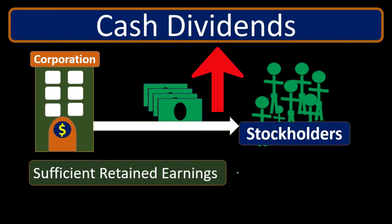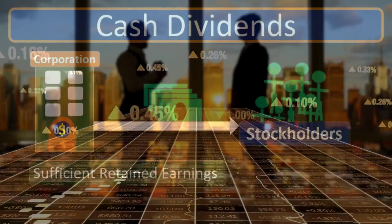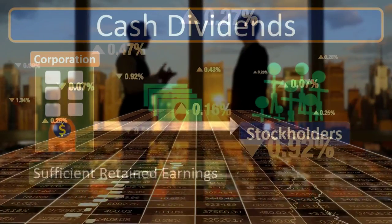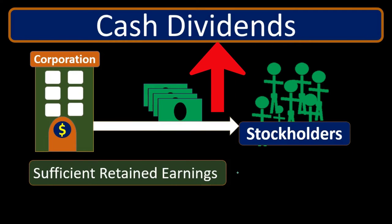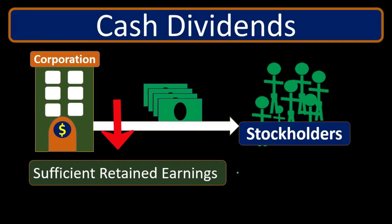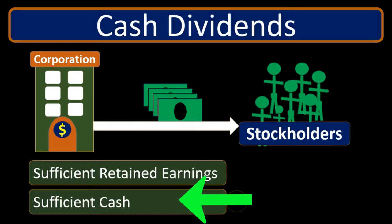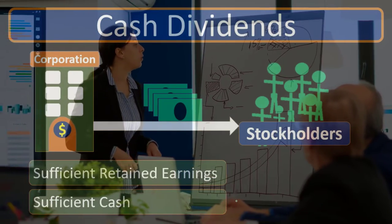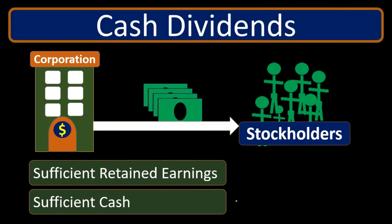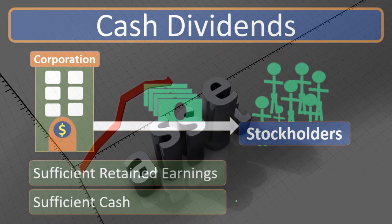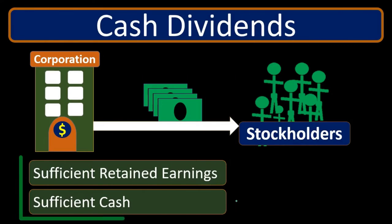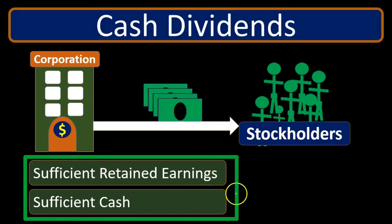When we give out dividends, we want to make sure we're giving them from the earnings of the corporation over and above the initial investment, because distributing the initial investment could have tax and other consequences. So one restriction is whether there are sufficient retained earnings. Another restriction is that we must have sufficient cash — just because we have retained earnings doesn't mean we have cash, since assets may be tied up in equipment, buildings, land, or inventory.